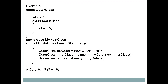Let's look at an example. We have a class OuterClass that defines a variable x equals 10 as an instance variable. Inside it we have InnerClass, which also defines an instance variable y equals 5. We also have our main class MyMainClass containing the main method, from which we want to create an object of the inner class.